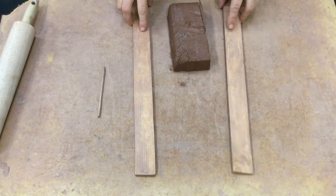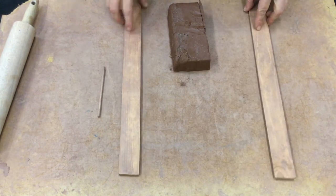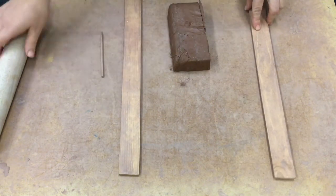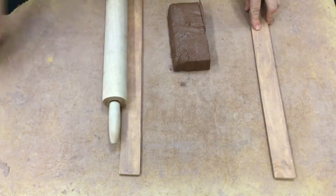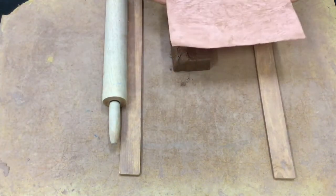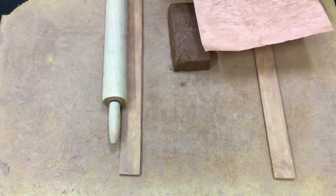You're going to get two slats that will help you get the right thickness. You're going to need a wooden stylus, a rolling pin, and a pattern. So this is the rectangle that we need to cut out to make our cylinder.